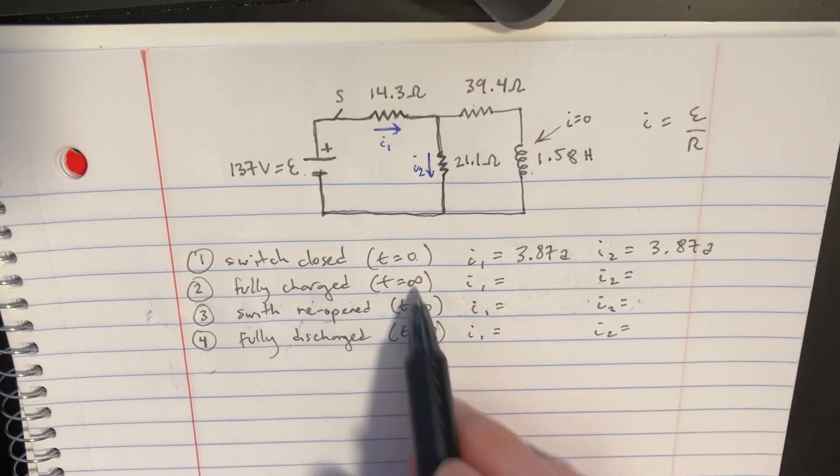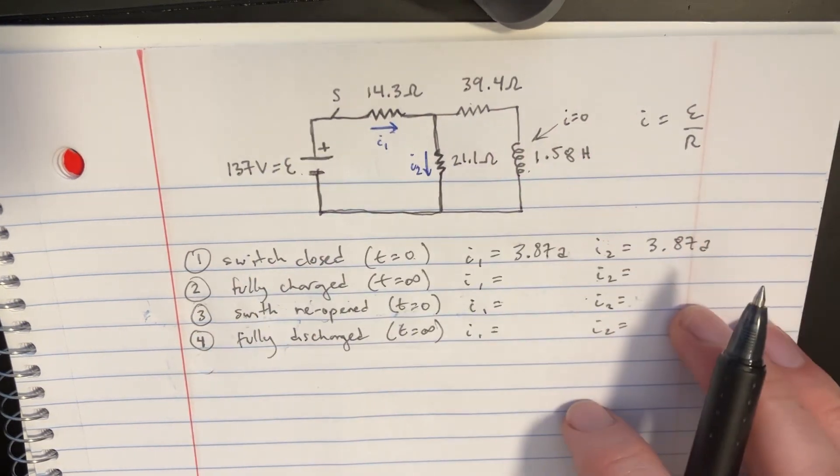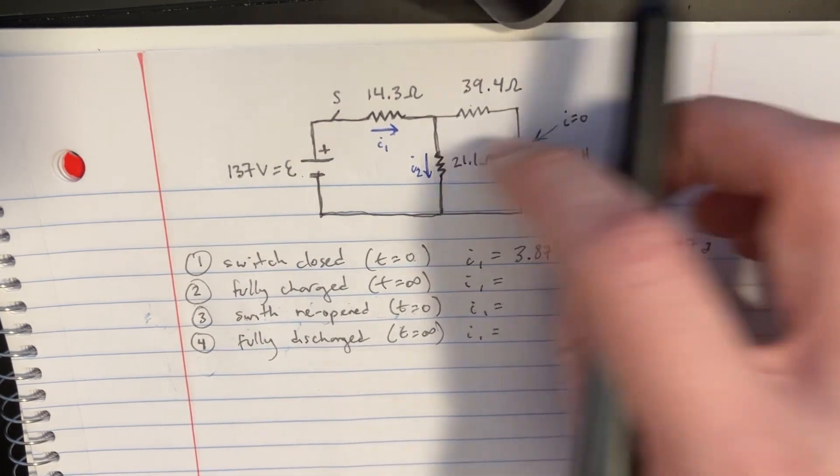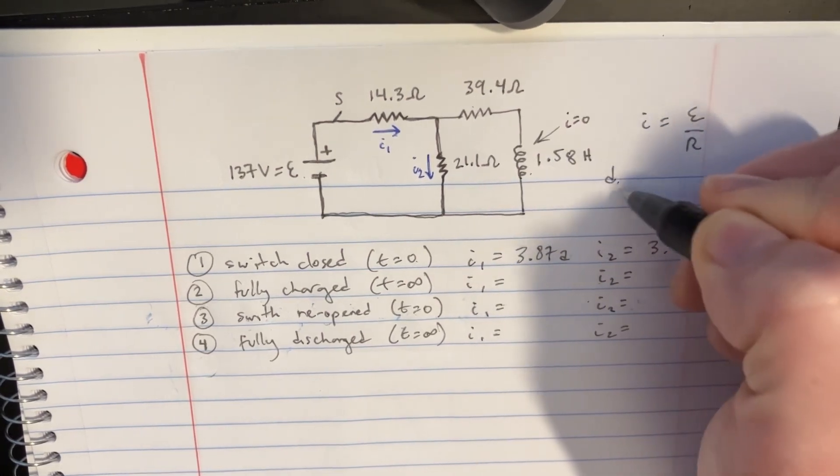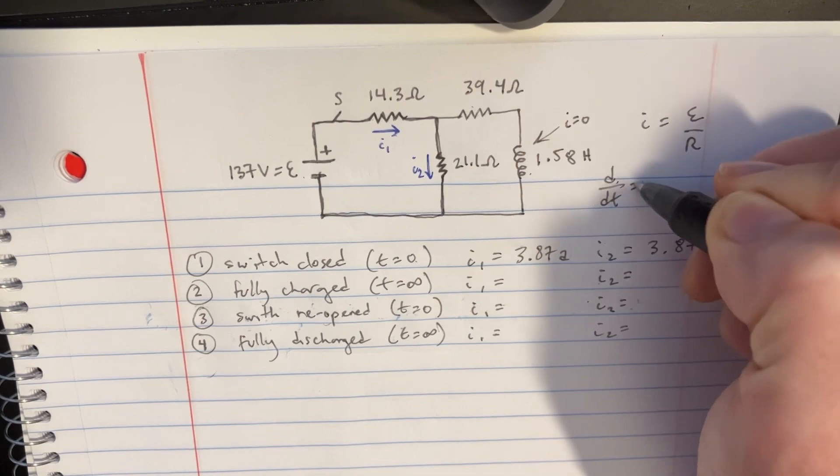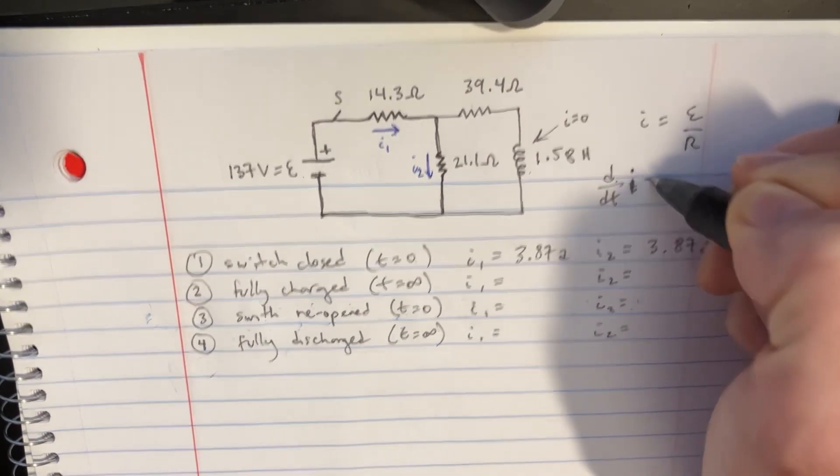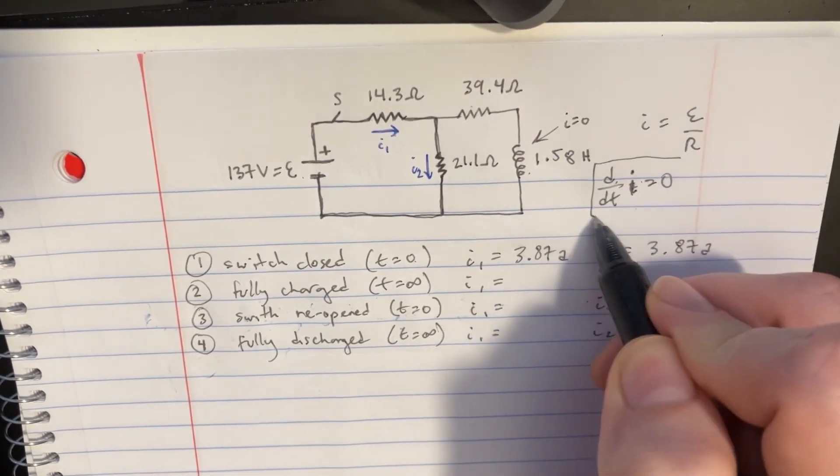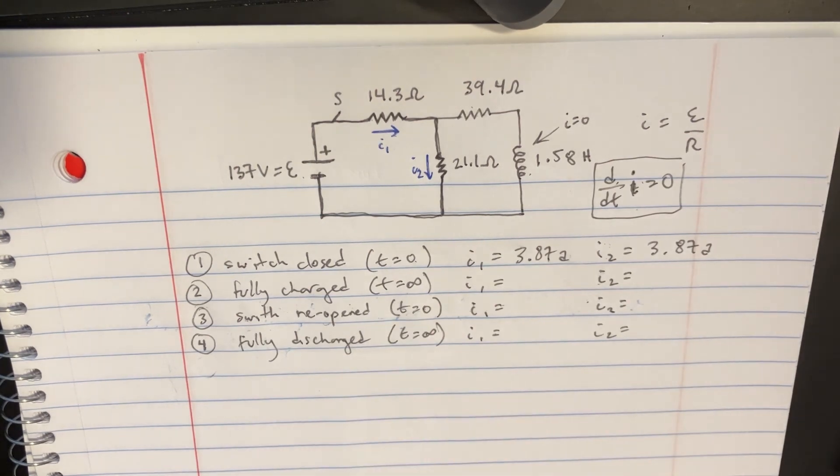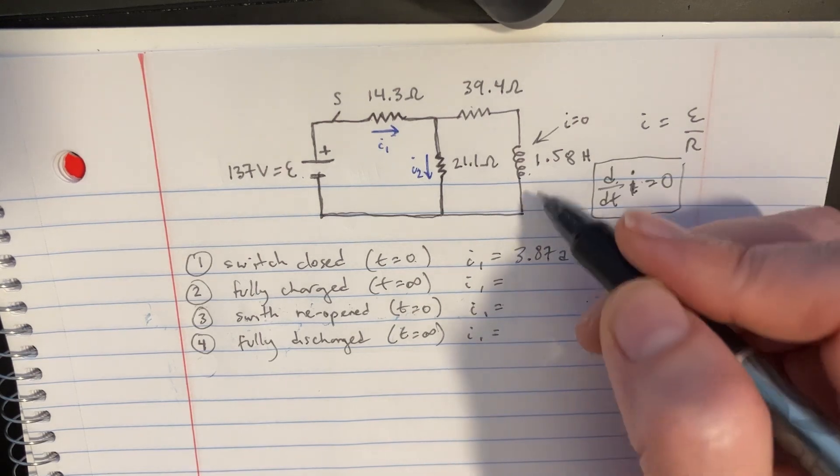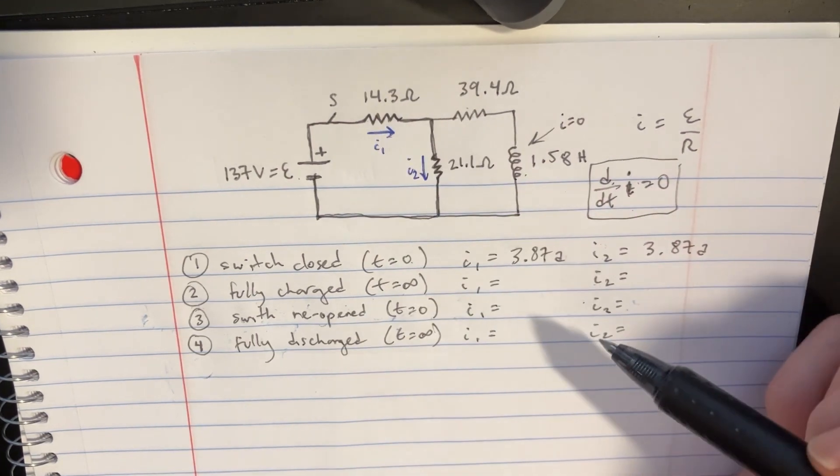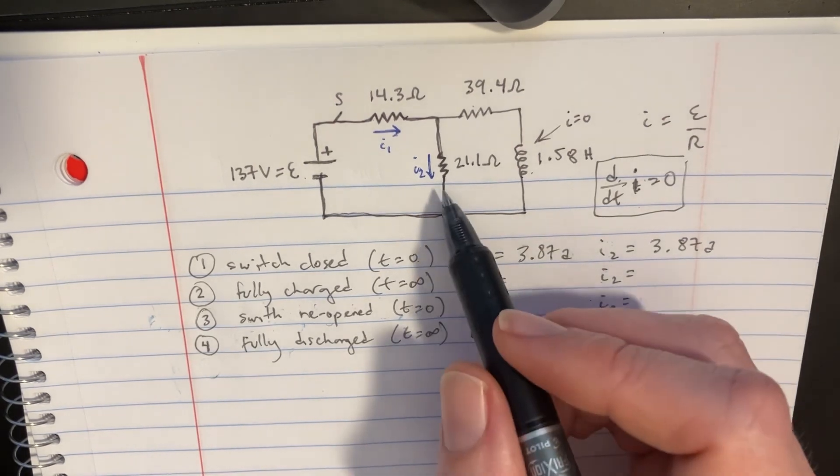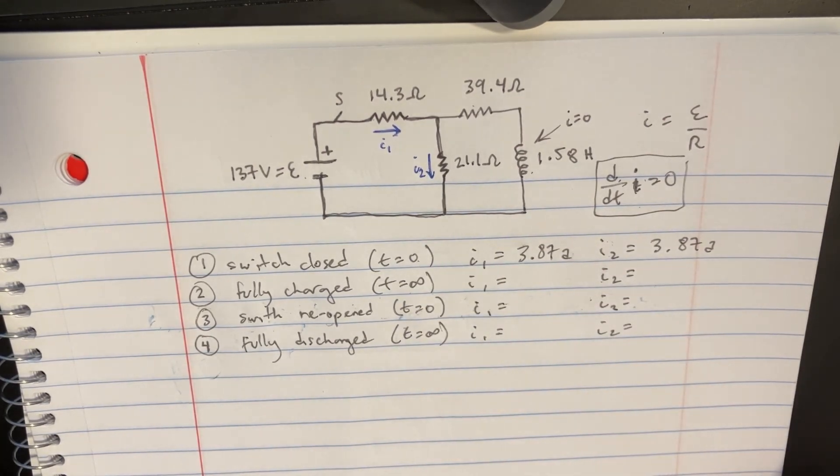So now we're looking at the fully charged state. Once the time has reached infinite and these things have sort of settled themselves out, we have the dI/dt being equal to 0. That's the change of current. At some point, once the time is infinity, the change of current is going to be 0. Everything needs to be settled down. So we're going to ask ourselves, what is the current through I1, and what's the current through I2?